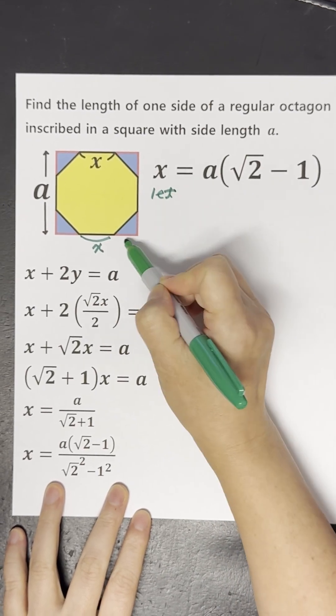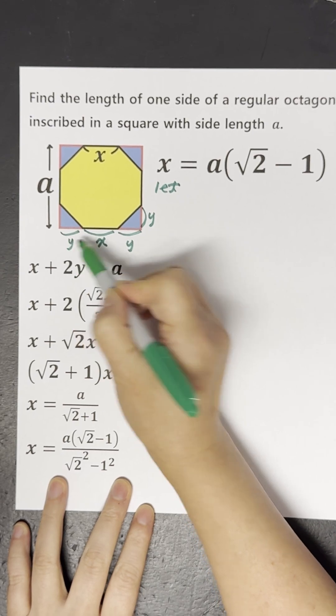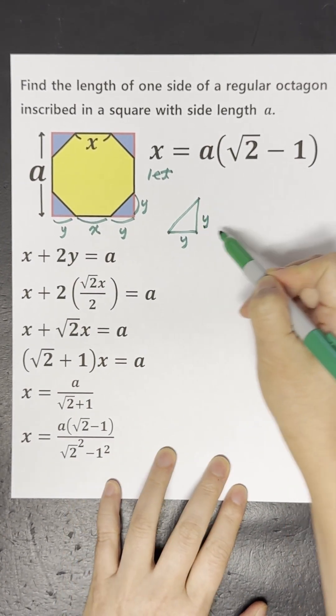First, we'll let this part be Y to create a triangle with side length Y, Y, and X.